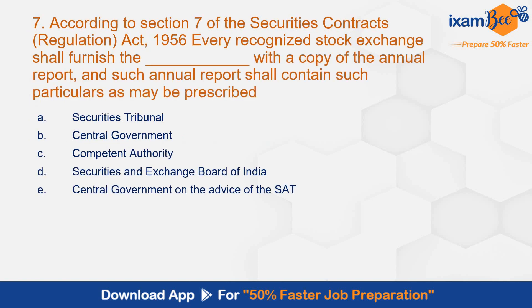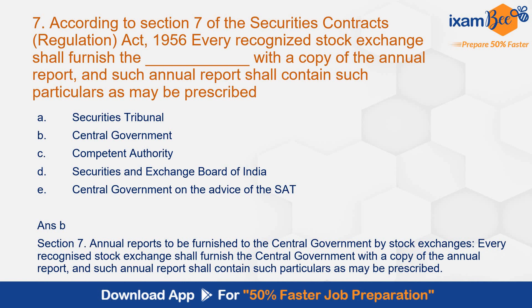Question number 7: According to section 7 of the Securities Contract Regulation Act, every recognized stock exchange shall furnish the [blank] with a copy of the annual report, and such annual report shall contain such particulars as may be prescribed. The correct answer is B, central government. Recognized stock exchanges shall furnish the central government with a copy of the annual report. This is as per section 7 — annual reports to be furnished to the central government by stock exchanges.